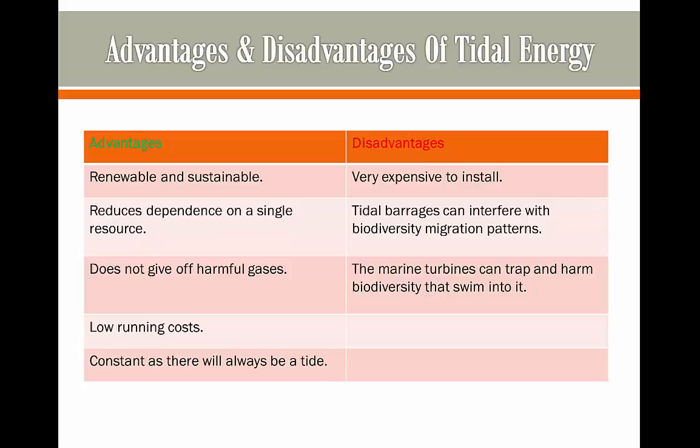Disadvantages, however, are that it's very expensive to install and it's going to cost a lot of money. It's also difficult to build such a large barrage in the case of a tidal barrage. Tidal barrages can also interfere with biodiversity and migration patterns, such as fish trying to move between the sea and the estuary on a daily basis. Marine turbines can also trap and harm biodiversity that swim into them, potentially killing them — which is a problem for marine life.